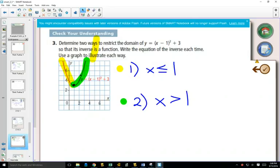So, here there are many different answers, but what they're looking for is this idea that I look at half of the parabola and the other half of the parabola, especially because they want you to write the equation of the inverse each time. So, it might be a little bit more difficult if you don't choose just half of the parabola to write that equation.